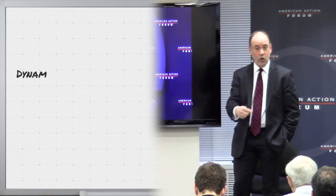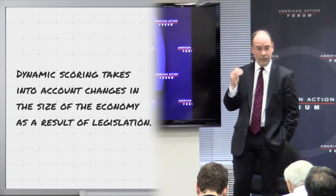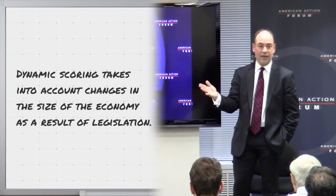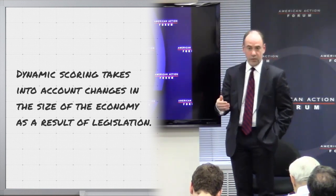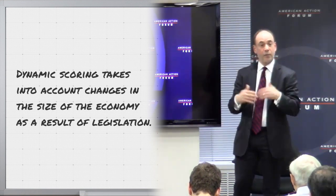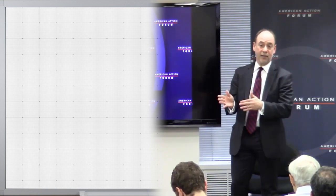Dynamic scoring differs from static scoring only in that you allow for the size of the economy to change. You allow yourself to answer the question: does the economy grow more rapidly and get bigger as a result of this legislation? If so, you incorporate the feedbacks — with faster growth you get more revenue, with faster growth you're likely to have less spending on low income transfer programs. And for the reverse, with slower growth you get less revenue, you probably have higher spending, and budgetary deficits widen. That's the only difference between static and dynamic scoring.